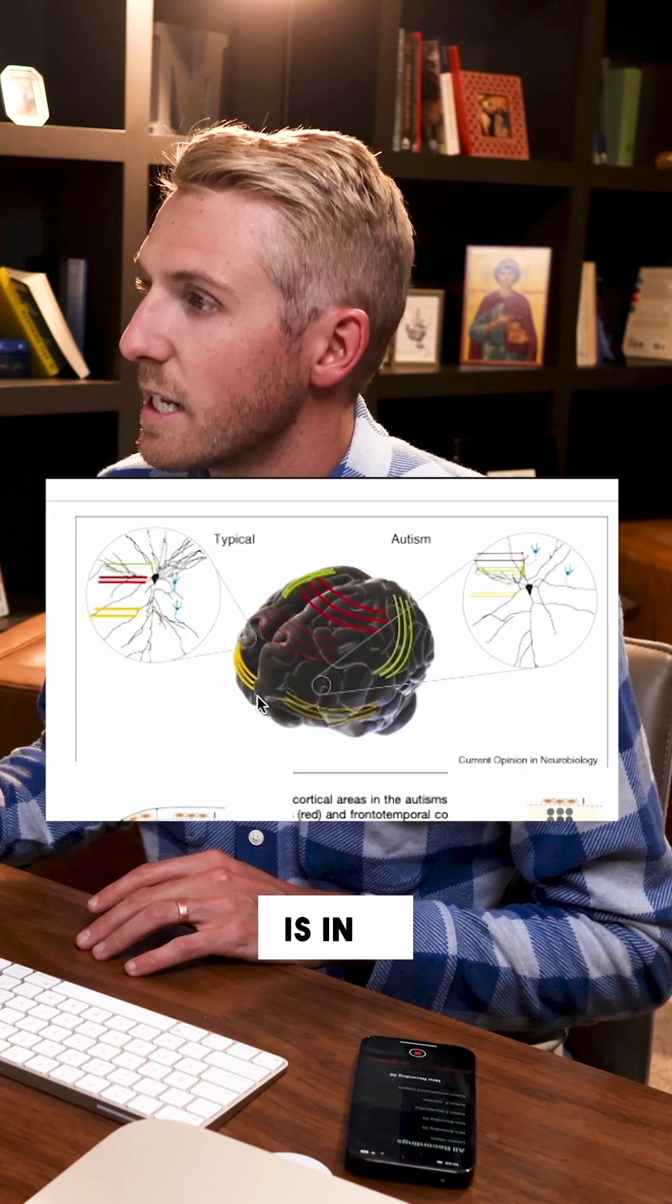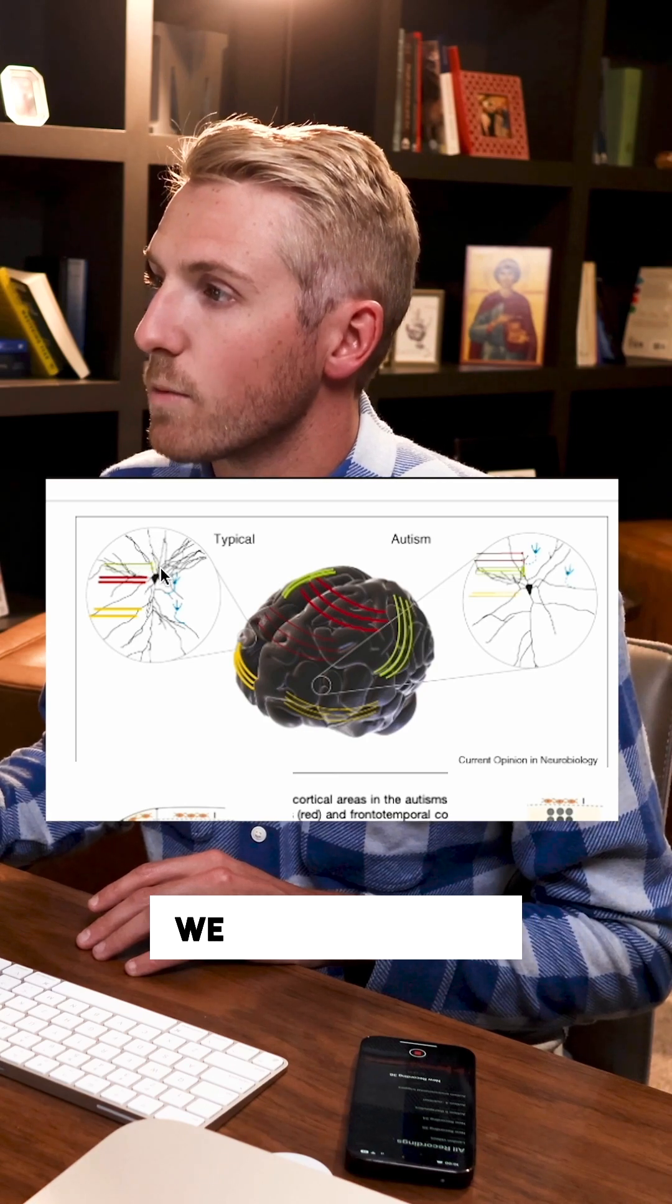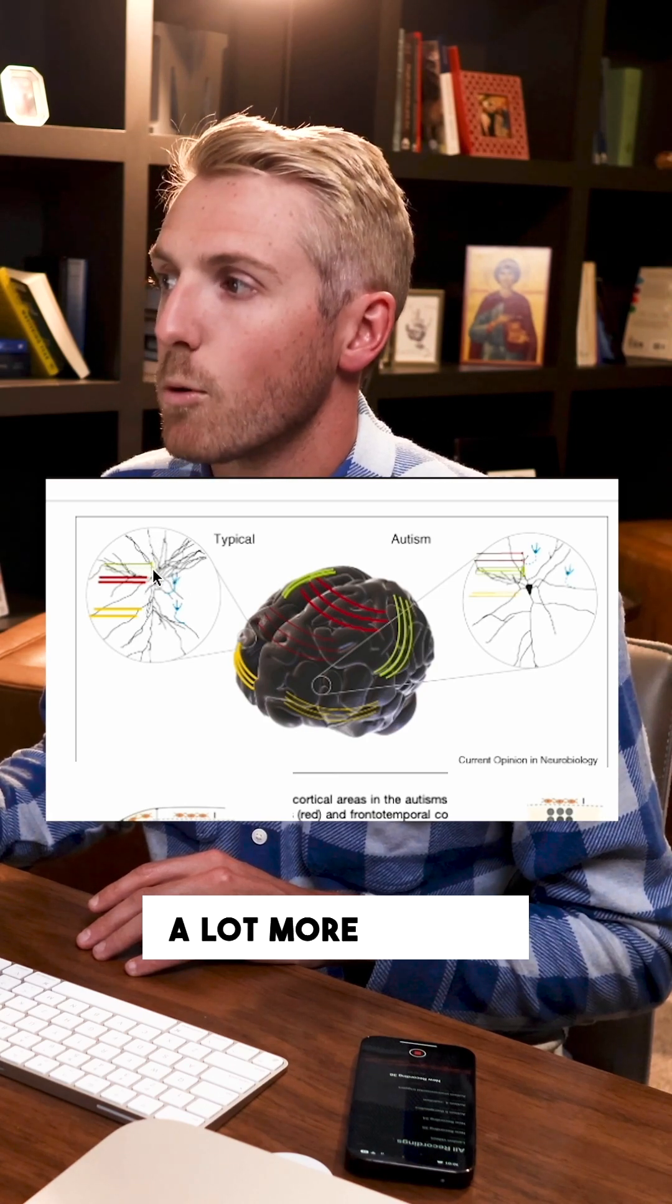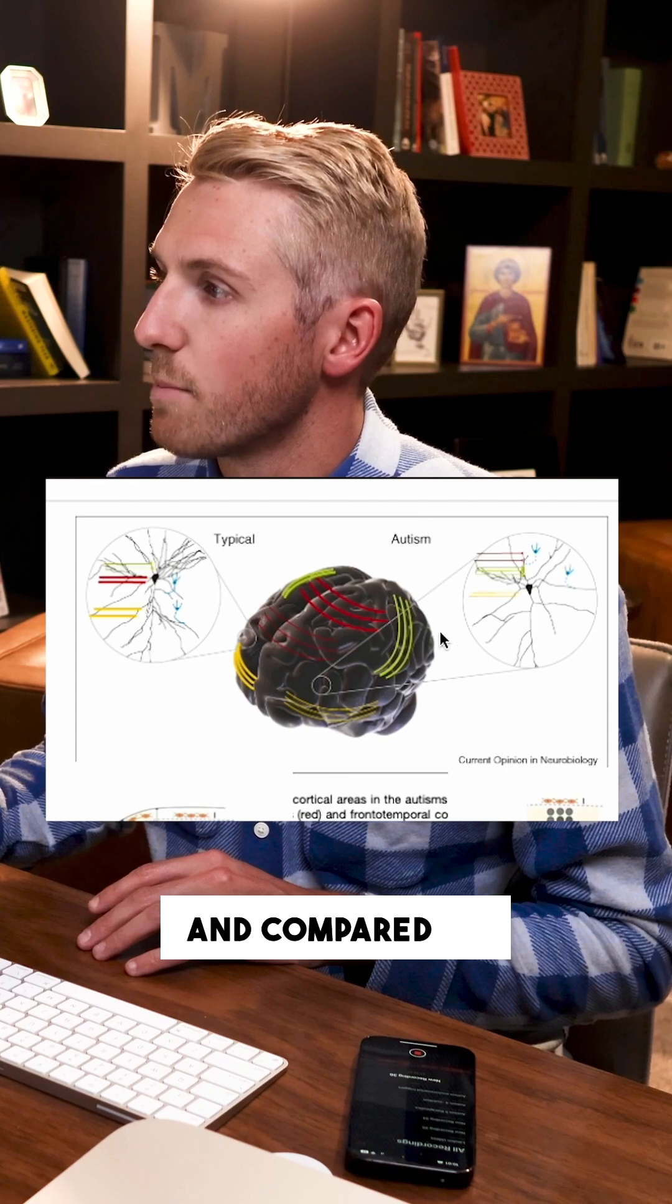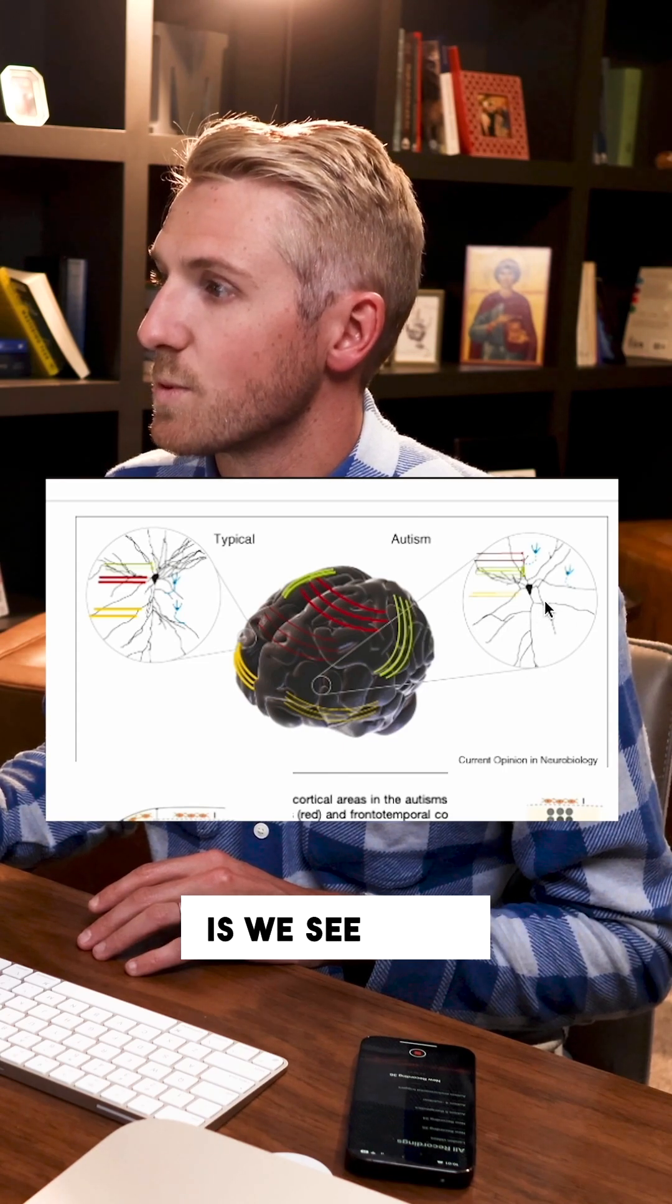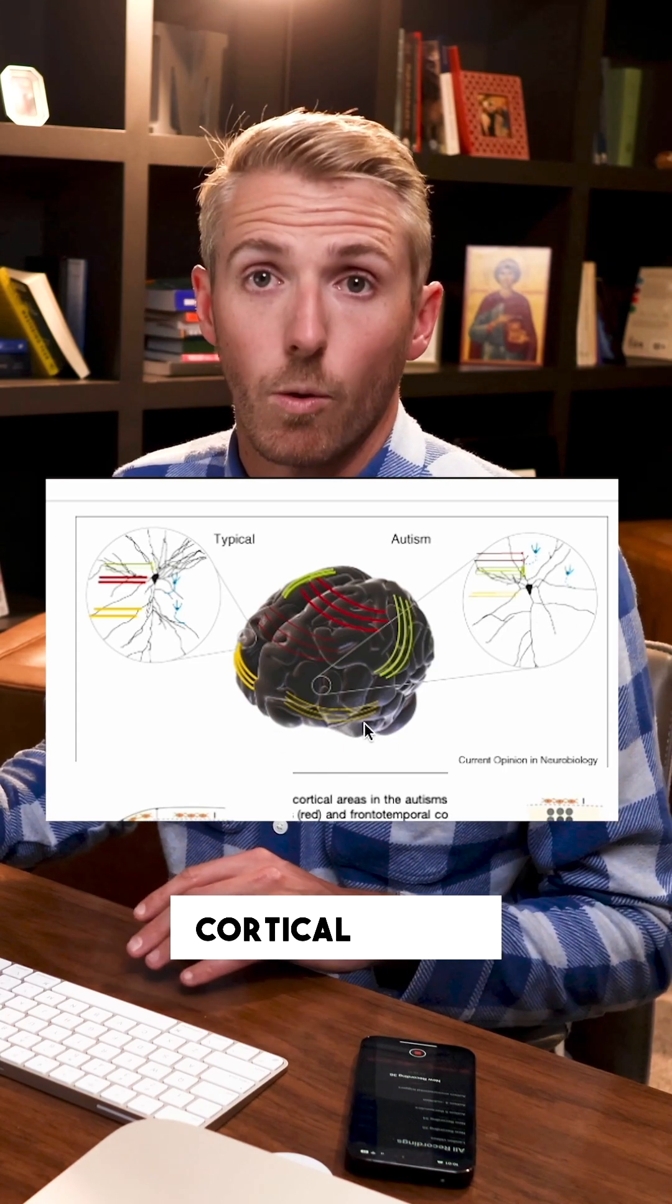Also, what we see is in a neurotypical child, we see a lot more connectivity, a lot more density of neurons and synapses. And compared to the brain of a child that has autism, we see a lot less, especially in these higher cortical areas.